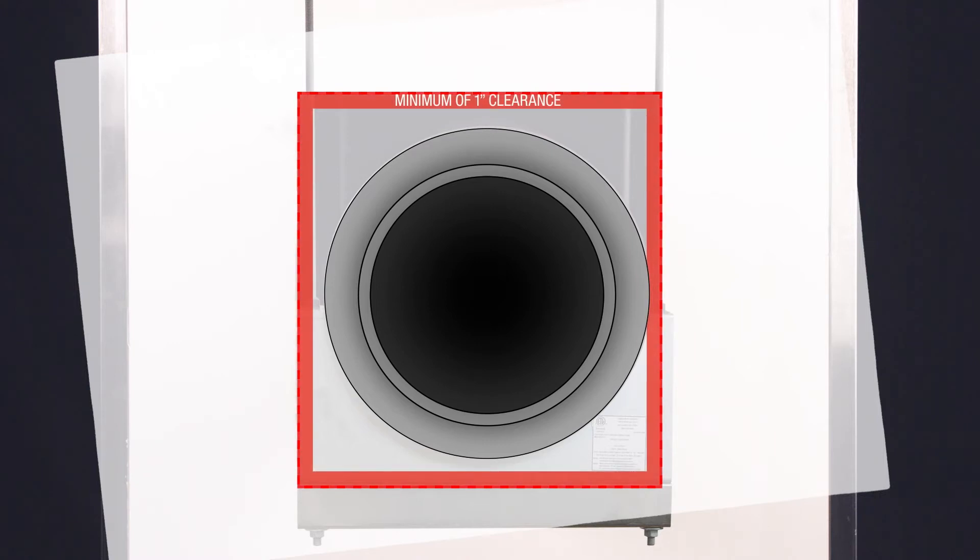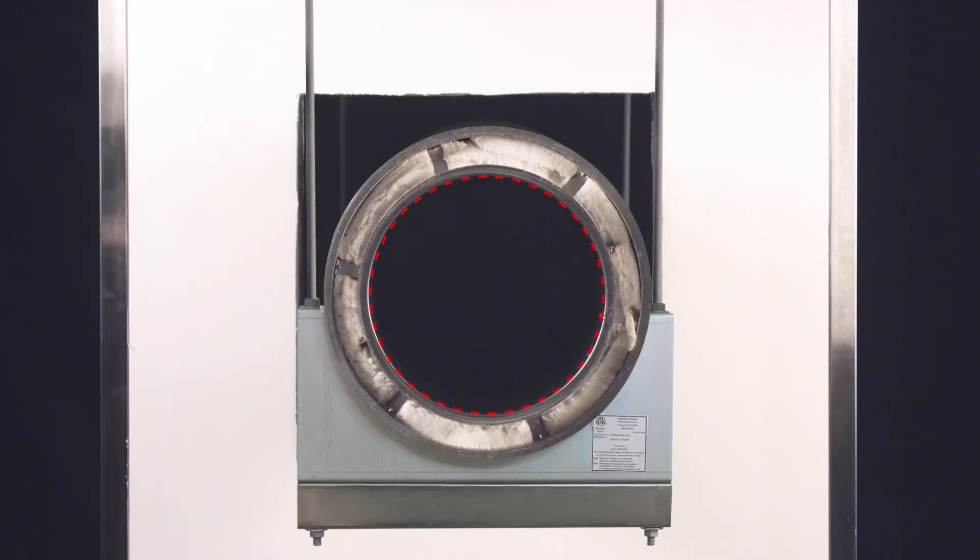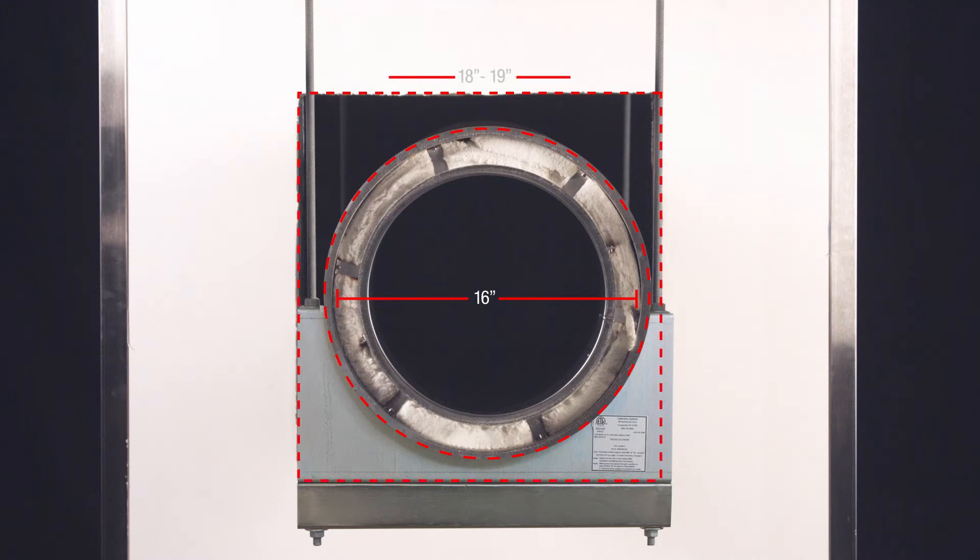The duct must be at least one inch away from the framed opening on all sides. For example, the duct shown here has an inner diameter of 12 inches and an outer diameter of 16 inches. So the opening in the firewall should be an 18 to 19 inch square.